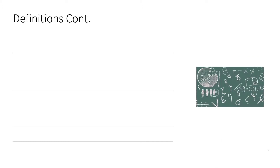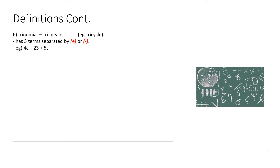Definitions continued. Number 6, Trinomial: tri means three — example, tricycle. It has three terms separated by a plus or a minus. Example: 4c plus 23 plus 5t. We can see there are three terms separated by a plus, so tri means three.